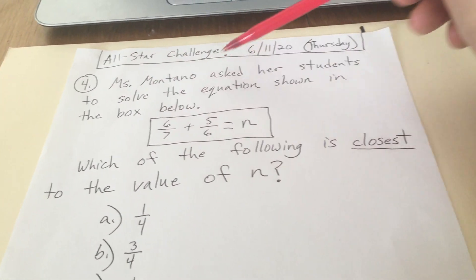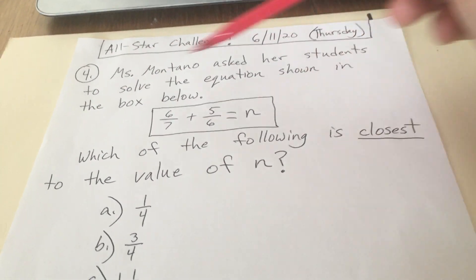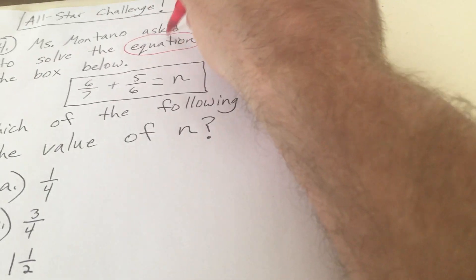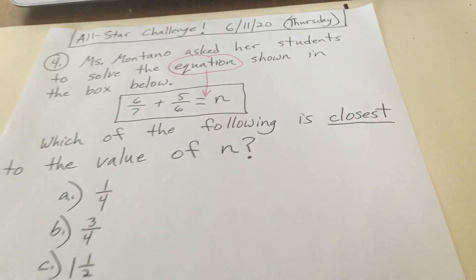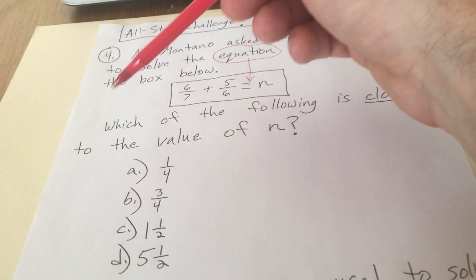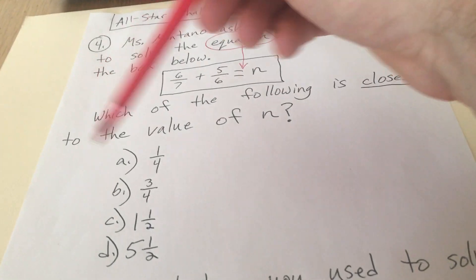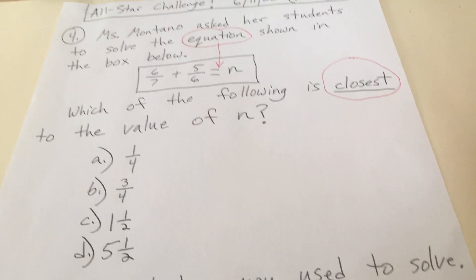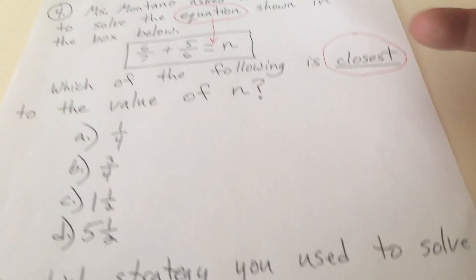Ms. Montano asked her students to solve the equation shown in the box below. So here's the box, that's the equation. If you weren't sure what that word meant, it just means there's an equal sign in it. She's going to solve that. Which of the following is closest to the value of n? So none of them are going to be exactly the value of n.